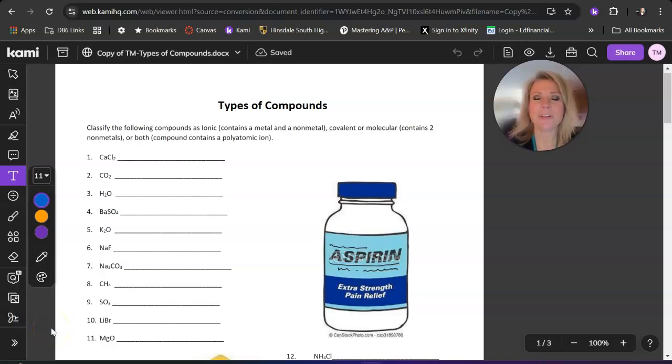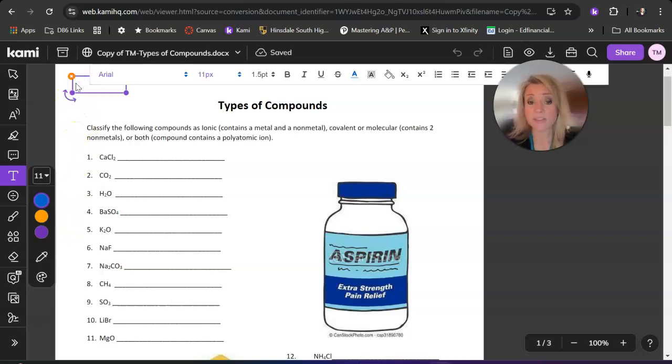Hello again chemistry students. Now that you've learned about the different kinds of bonds that atoms can make with each other, now we're going to look at the different kinds of compounds that they can form. So the first thing you need to know is what is a compound. And again this is something that you've learned in the last unit during the periodic table.